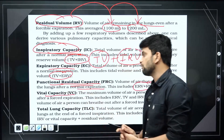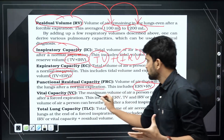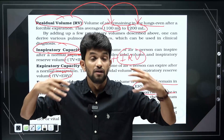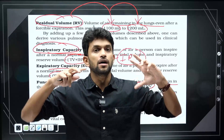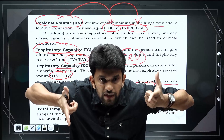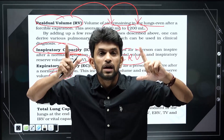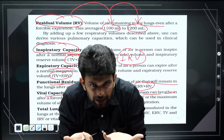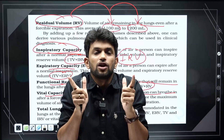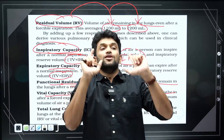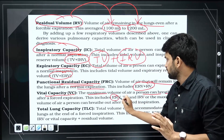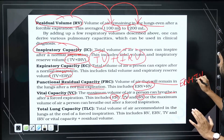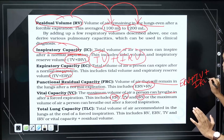Vital capacity is the maximum volume of air a person can breathe in after forced expiration. It equals expiratory reserve volume plus tidal volume plus inspiratory reserve volume — ERV plus TV plus IRV.